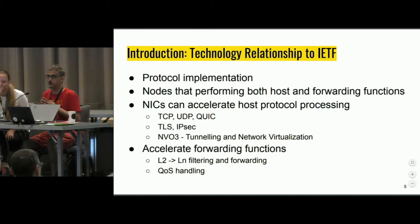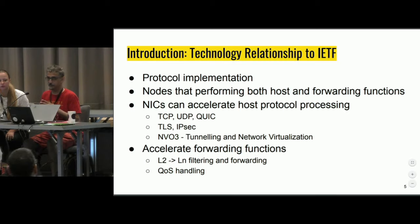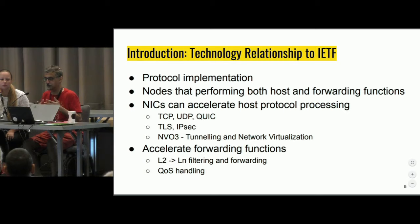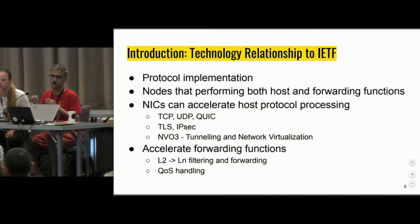The relationship to the IETF: if you're implementing protocols, this is very relevant to you. You're running on the host or some middle boxes which end up using NICs — for nodes that perform both host-level features or forwarding functions. NICs can process a lot, accelerate as well, and have hardware helpers for TCP, UDP, QUIC, TLS, IPsec. A lot of NVO3 is mostly commodity offloading at this point. You can accelerate any layer 2 to layer N forwarding and filtering. There's a lot of QoS offloading. It's a very condensed session, so we'll only allow clarification questions, and any other questions will come at the end.